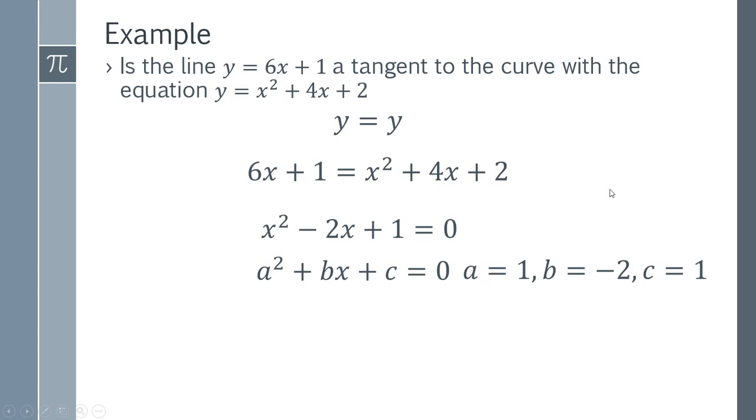We then have our discriminant formula, and we're predicting that if this is a tangent, if this statement is true that this line is in fact a tangent to that curve, we'll have the condition that this statement is true, that b squared minus 4ac does equal zero. If it doesn't equal zero, then 6x plus 1 is not a tangent to this line.